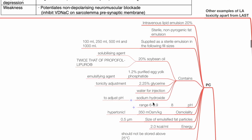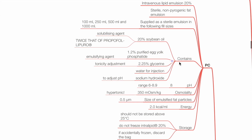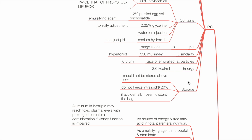Pharmacology of intralipid. Intralipid 20% is an IV lipid emulsion supplied in various sizes: 100mL, 250mL, 500mL and 1000mL. It contains 20% soybean oil as solubilizing agent, 1.2% purified egg yolk phosphatide as emulsifier, 2.25% glycerine to adjust tonicity, water for injection and sodium hydroxide to adjust pH. pH is 8, osmolality is 350mOsmol per kg (hypertonic), size of emulsified fat particles is 0.5 micrometres, energy is 2 kcal per mL. Should not be stored above 25°C and do not freeze.